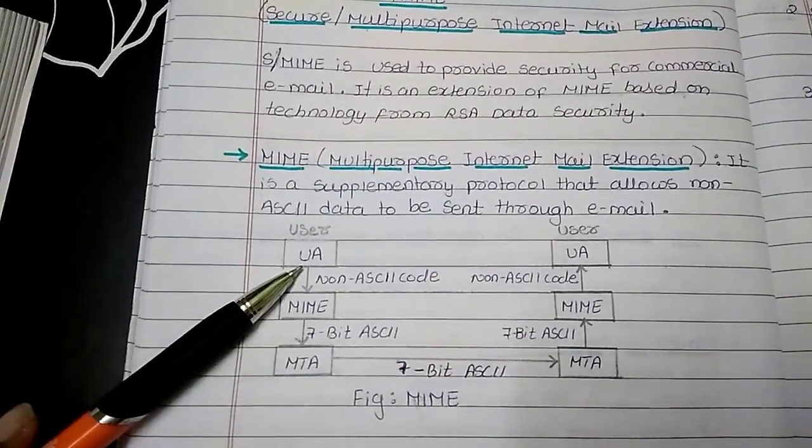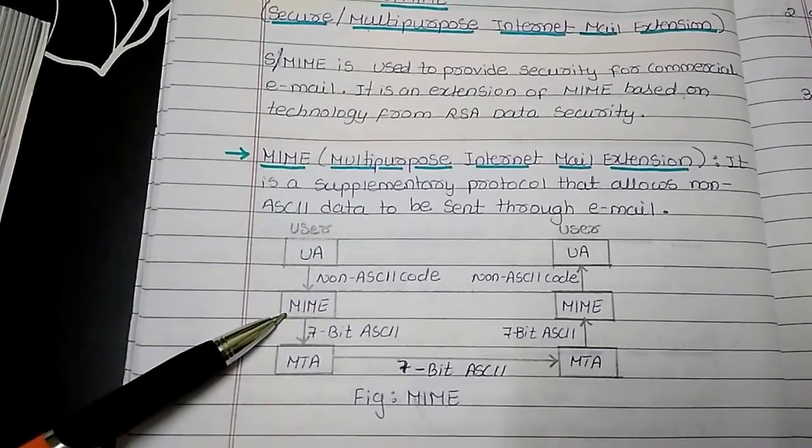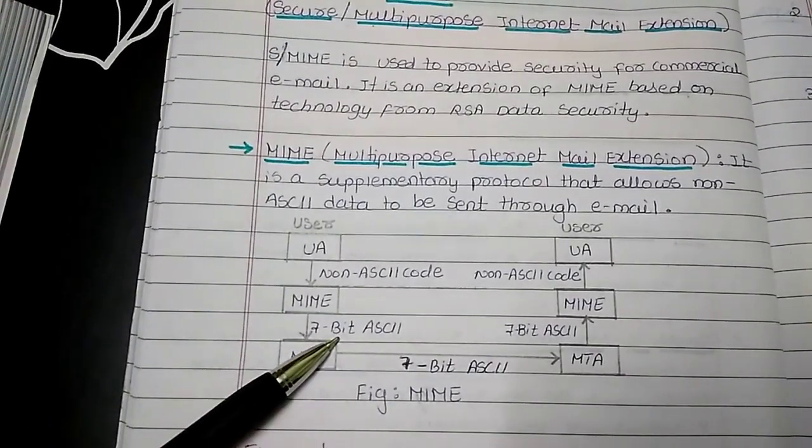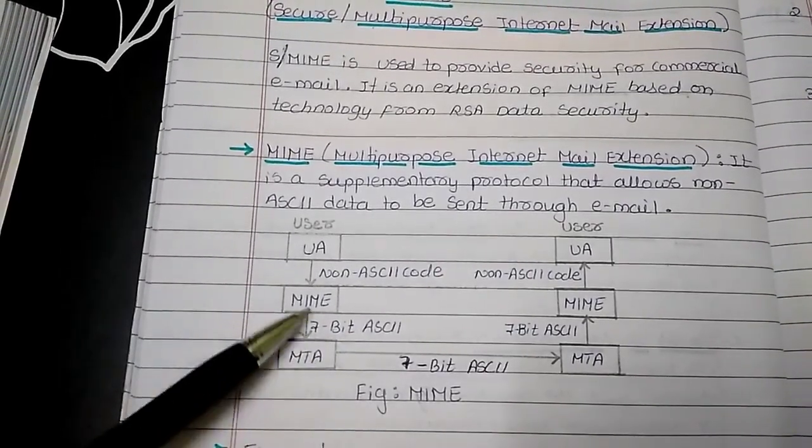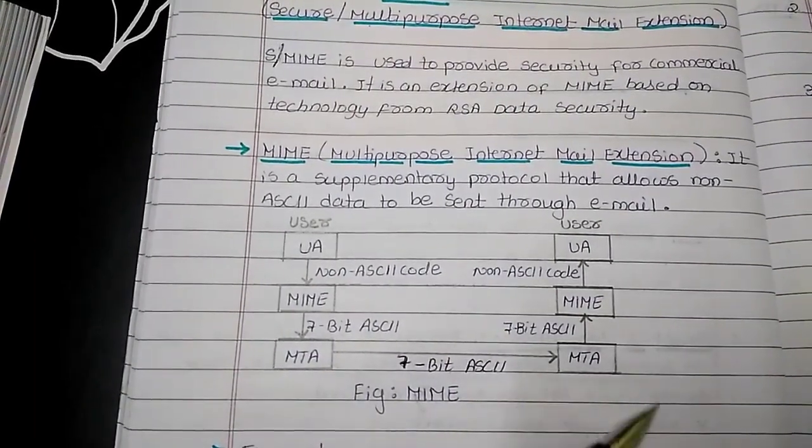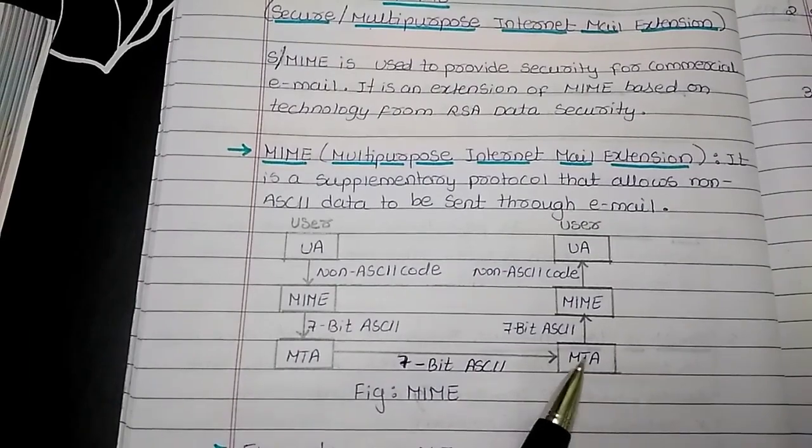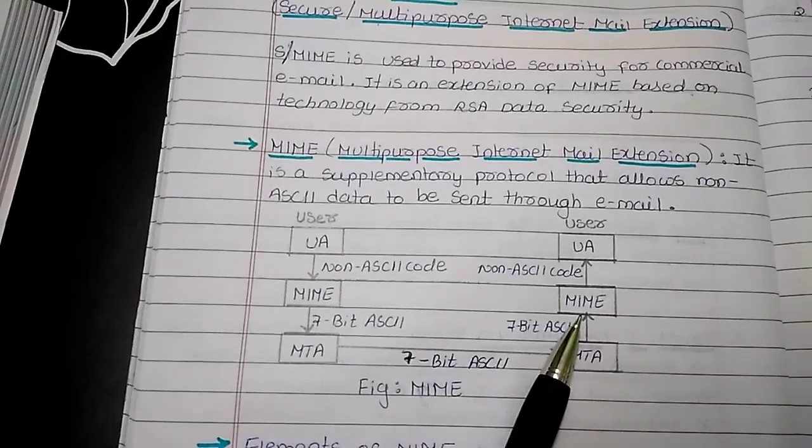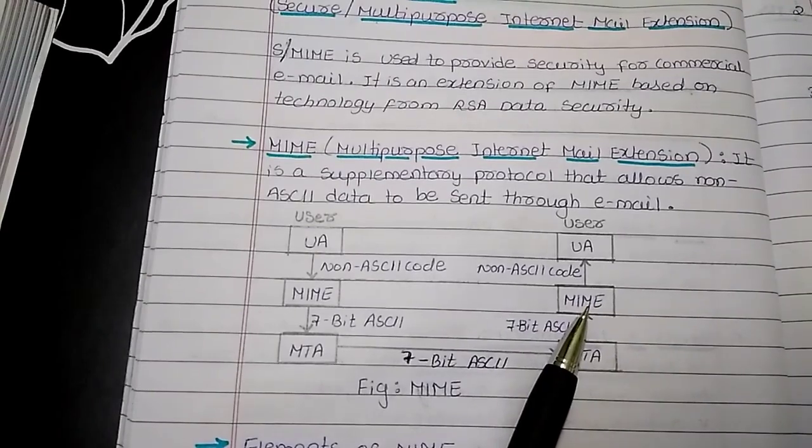Here is the user. By using a user agent, the user sends non-ASCII code to MIME. In turn, MIME converts the message to 7-bit ASCII. Using a message transfer agent, the sender sends the data over the internet. At the receiving end, the message transfer agent accepts the 7-bit ASCII data and transfers it to MIME. The work of this MIME is to convert the 7-bit ASCII data back into a non-ASCII message.